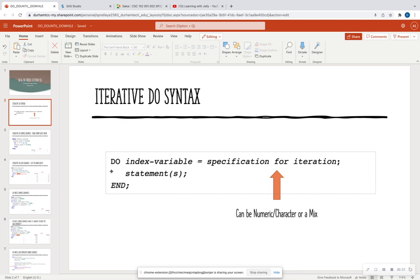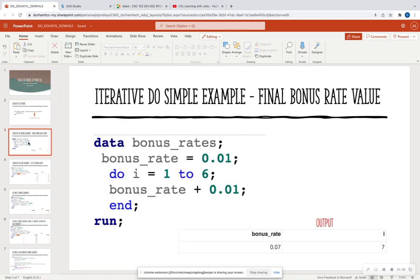So let's jump right into seeing this Do Loop in action with our first example, where we're going to get out a final bonus rate value. I have a data set, and the data set that we're working with that I'm creating is bonus_rates. I'm starting with the bonus rate to be 0.01, and then I'm going to iterate six additional times and add another 0.01 to that bonus rate.